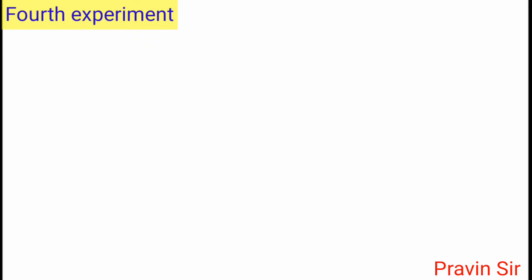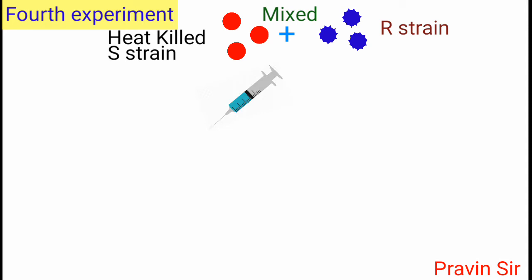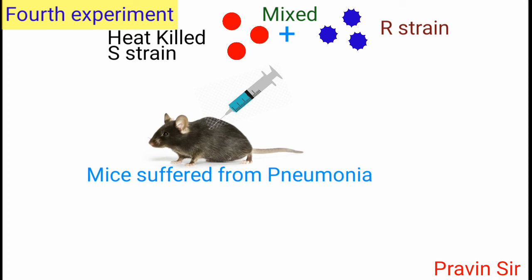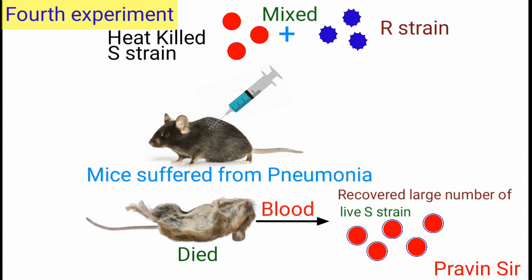In the fourth experiment, Griffith mixed heat-killed S strain and live R strain and injected the mixture into mice. The mice suffered from pneumonia and died. From the blood of the dead mice, he recovered a large number of live S strain bacteria.